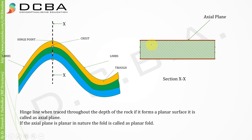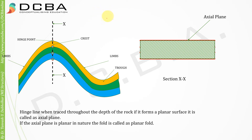When we connect lines we get a surface or a plane. So the hinge line, when traced — and by connecting lines I mean connecting them vertically — forms a surface, and it is called the axial plane. When the hinge line is traced throughout the depth of the rock, it forms a planar surface called the axial plane. If the axial plane is planar in nature — meaning it is not undulated, it is a straight surface — the fold is called a planar fold.